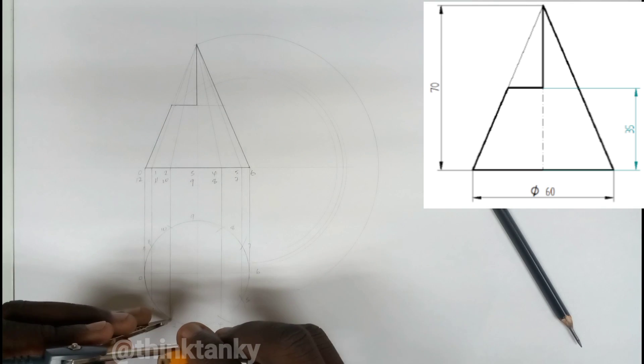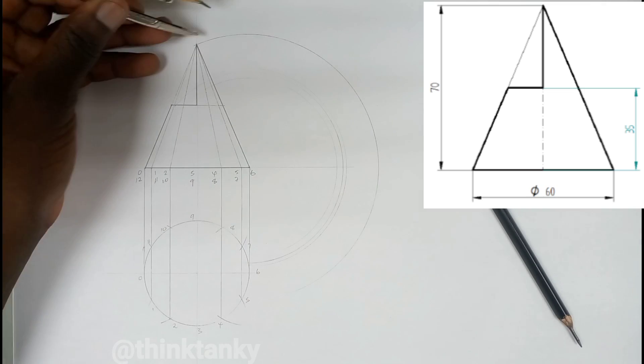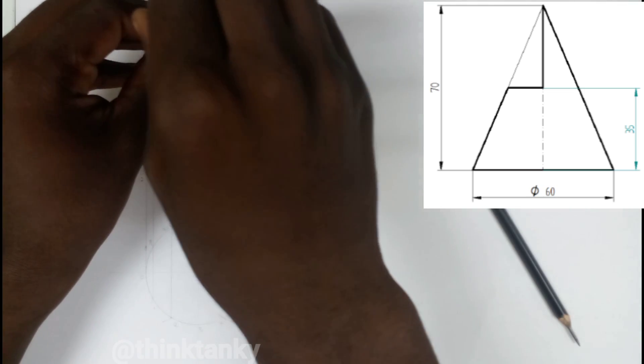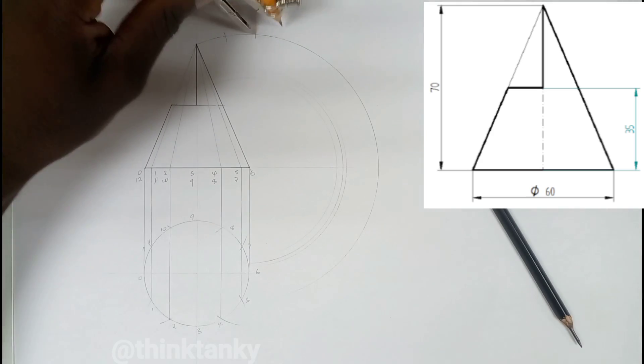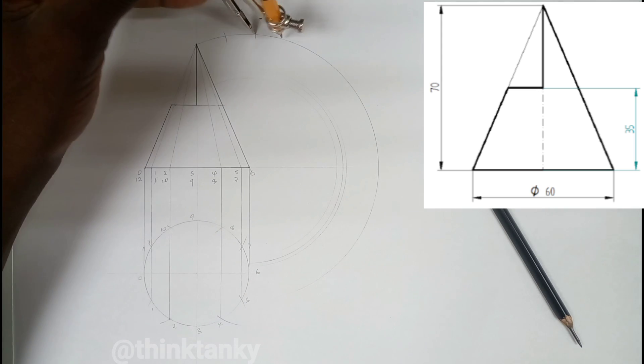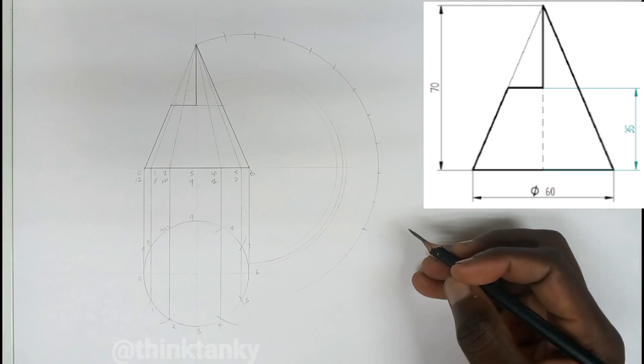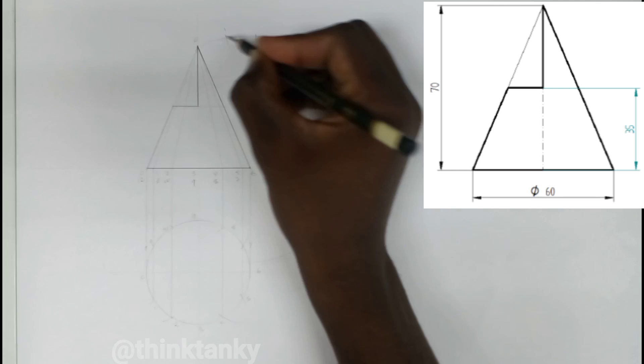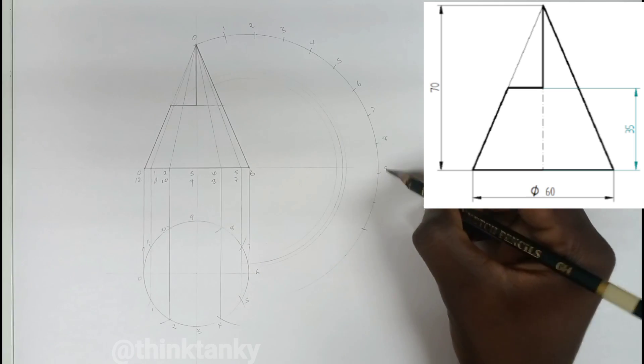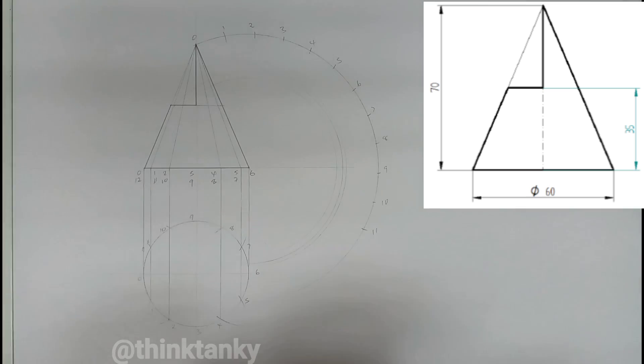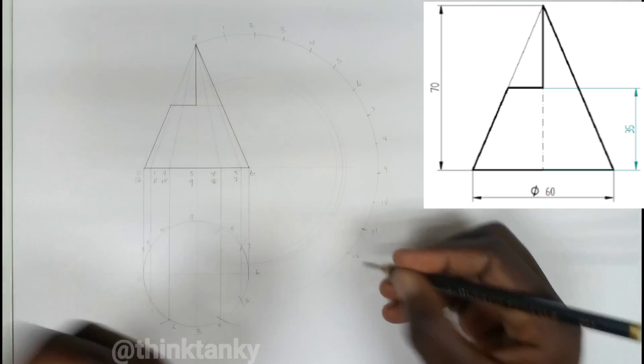Using your compass, measure this distance from here to here. Starting from this point, you're going to strike the arc in the same distance. So this is 0, 1, 2, 3, 4, 5, 6, 7, 8, 9, 10, 11, and 12.